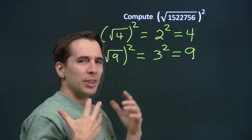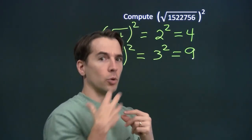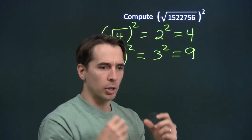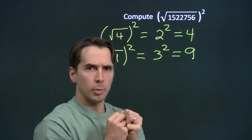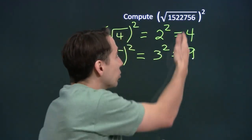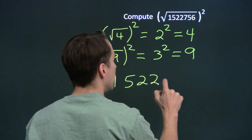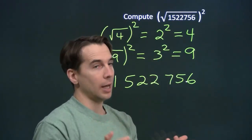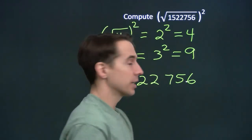Why? The square root of 4 is the number you square in order to get 4. The square root of 9 is the number you square in order to get 9. So if I take the square root of this giant number, I get the number that when I square it gives me the giant number. Then I square it — of course I'm going to get the giant number back, because that's what the square root is: it's the number we square in order to get 1,522,756. So squaring a square root is a lot like taking the square root of a square. It's a lot easier than it looks, and there's our answer.